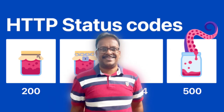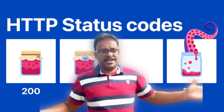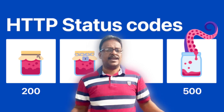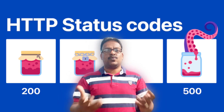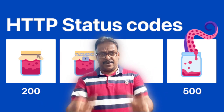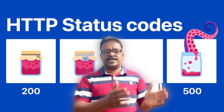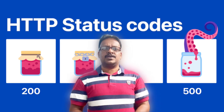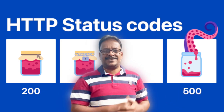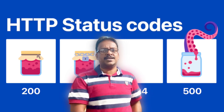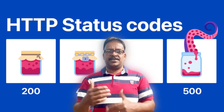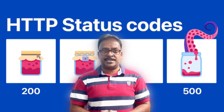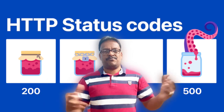Hi techies, welcome to my channel. Today I'm going to talk about the top 4 HTTP status codes. I'll explain what HTTP status codes are and what they mean. An HTTP status code is a numerical value you receive in a response from the server when you send a request from a client. Each response carries a different status code representing a different meaning.